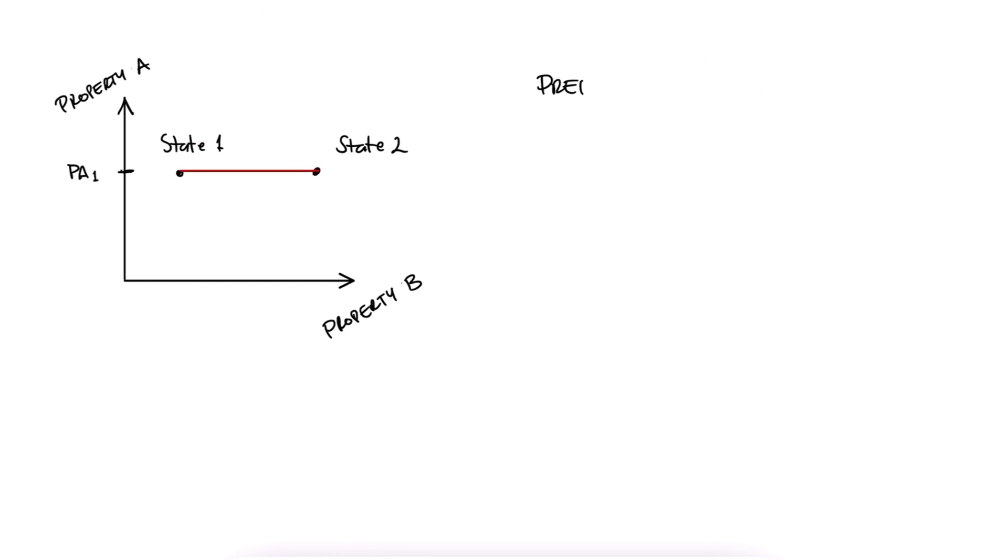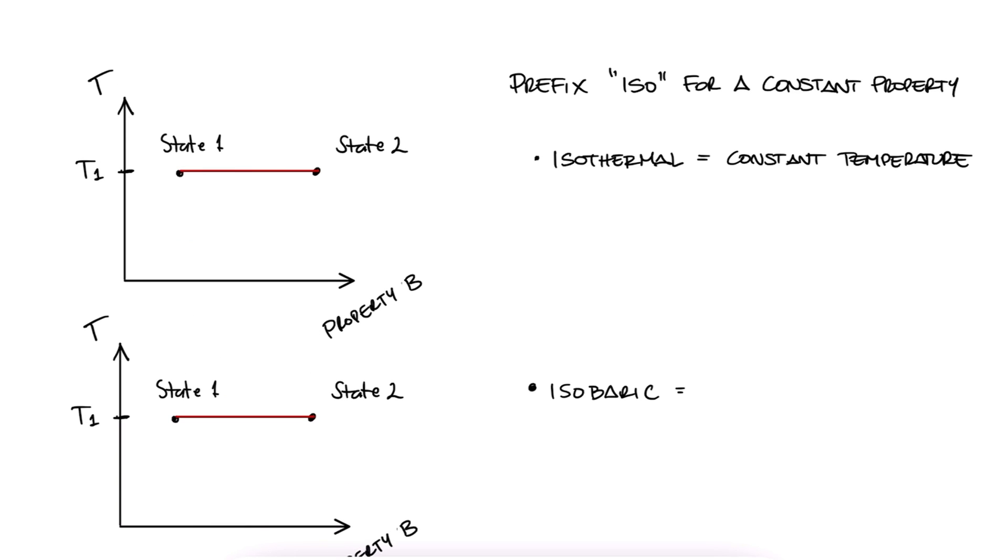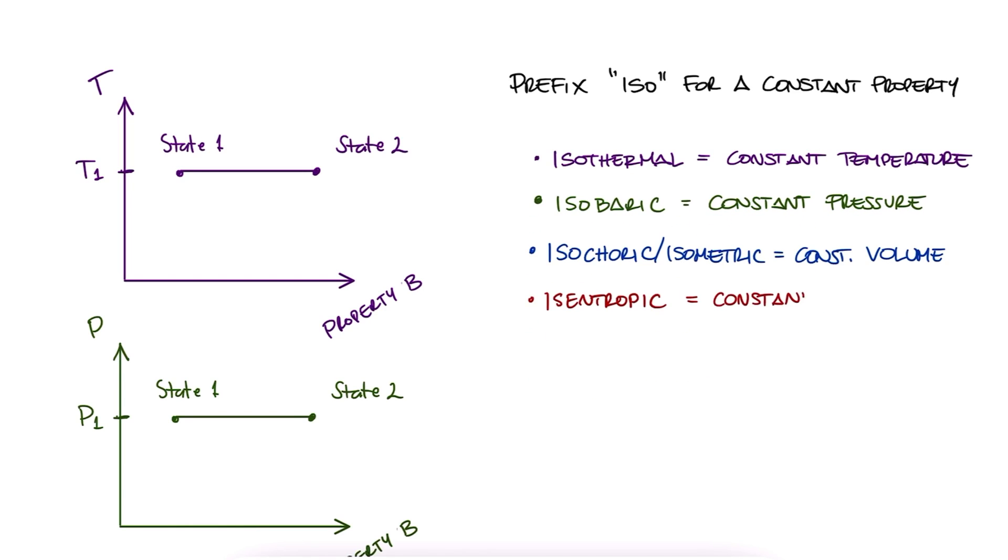We'll commonly use the prefix ISO before the property's name to point this out. For example, isothermal, to refer to a process where temperature is not changing, or isobaric, to refer to a process where the pressure is not changing. And some others we'll learn more about in later lectures.